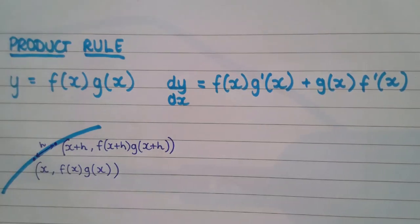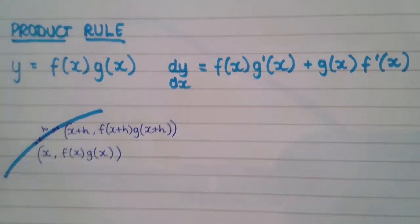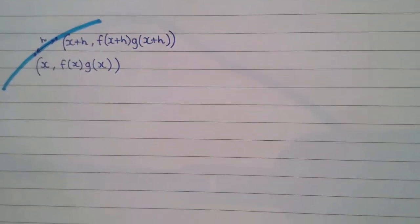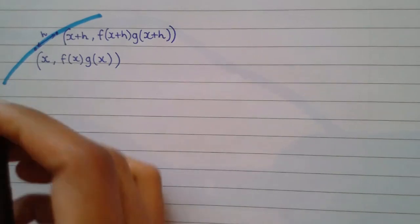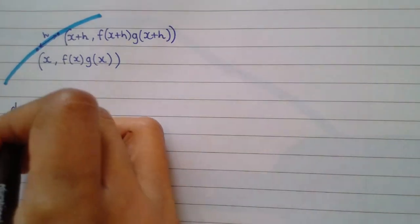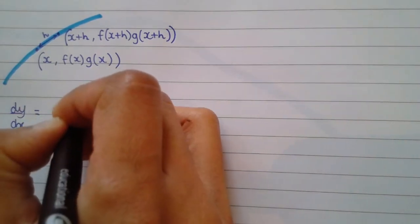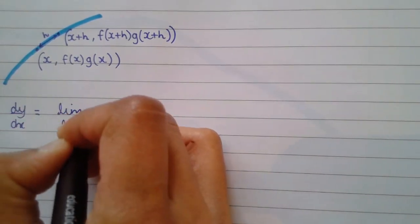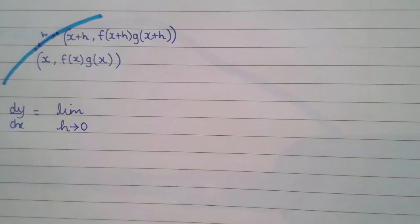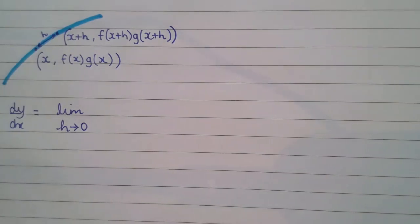And we start writing the proof now. So we start with dy by dx equals limit as h tends towards zero.